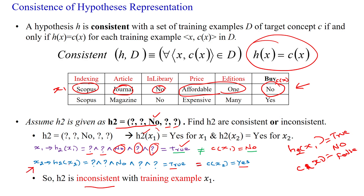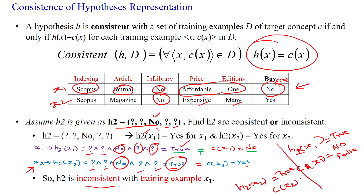H2 does satisfy sample X2 though. Question symbol accepting any value, no, no, question symbol accepting any values — so H2 of X2 is true, and C of X2 is also true. But even though these both are equal, the first sample is not satisfied. That is why this hypothesis H2 is inconsistent with respect to given dataset D. Thanks for watching.